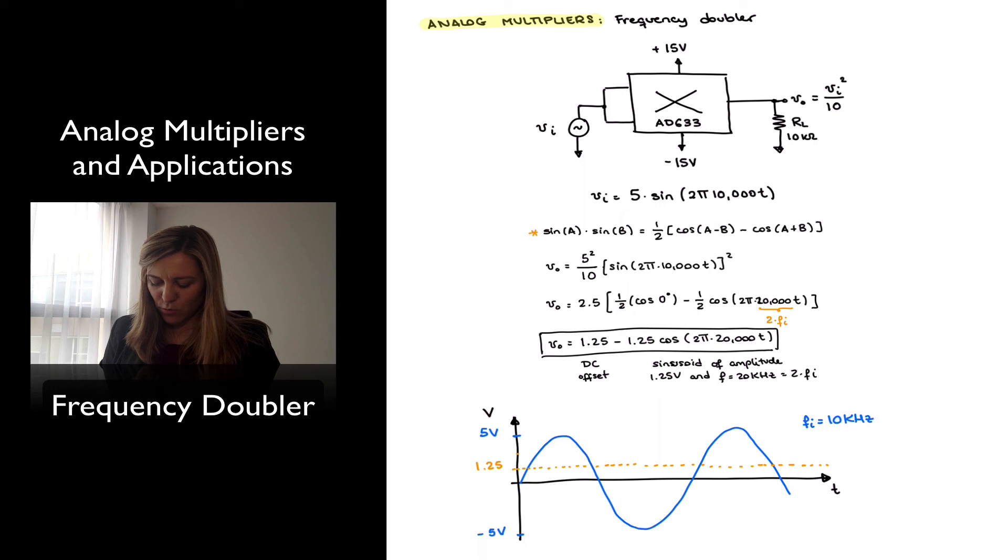Instead of starting at 2.5, it's going to be starting at 0, reaching a value of positive 2.5 at that point, etc.